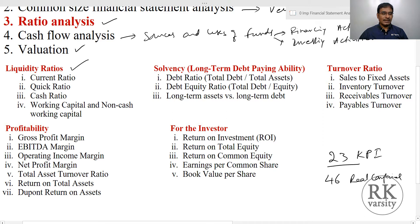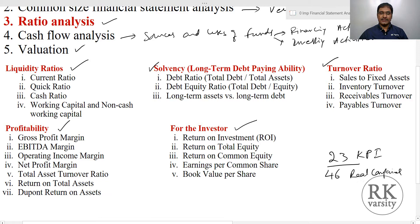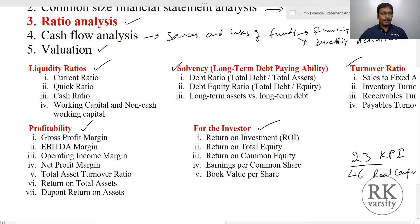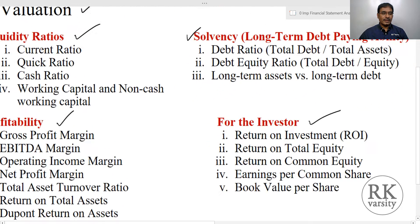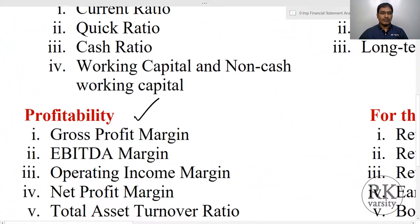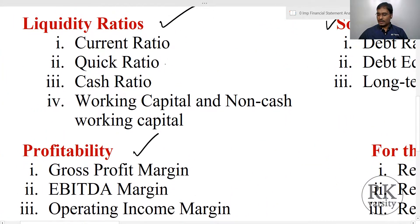The first category is liquidity ratios. The second is solvency ratios. The third is turnover ratios. The fourth is profitability ratios. And the fifth is for the investor side — what are the factors that investors look into while making an investment. In liquidity ratios, our focus is on current ratio, quick ratio, cash ratio, and working capital ratio — these are the four ratios we are covering.